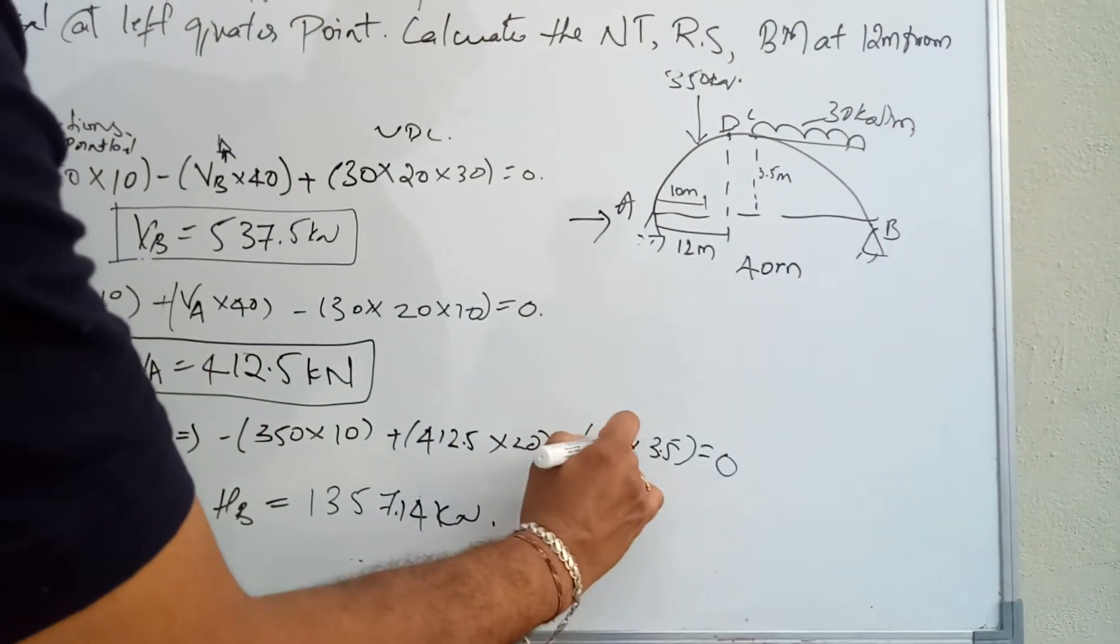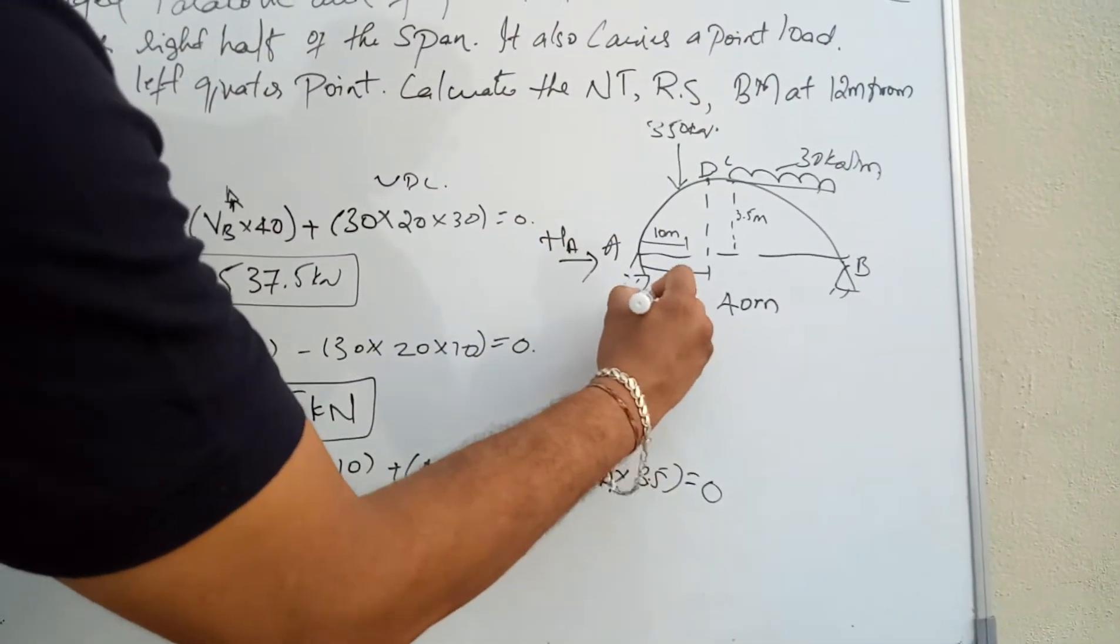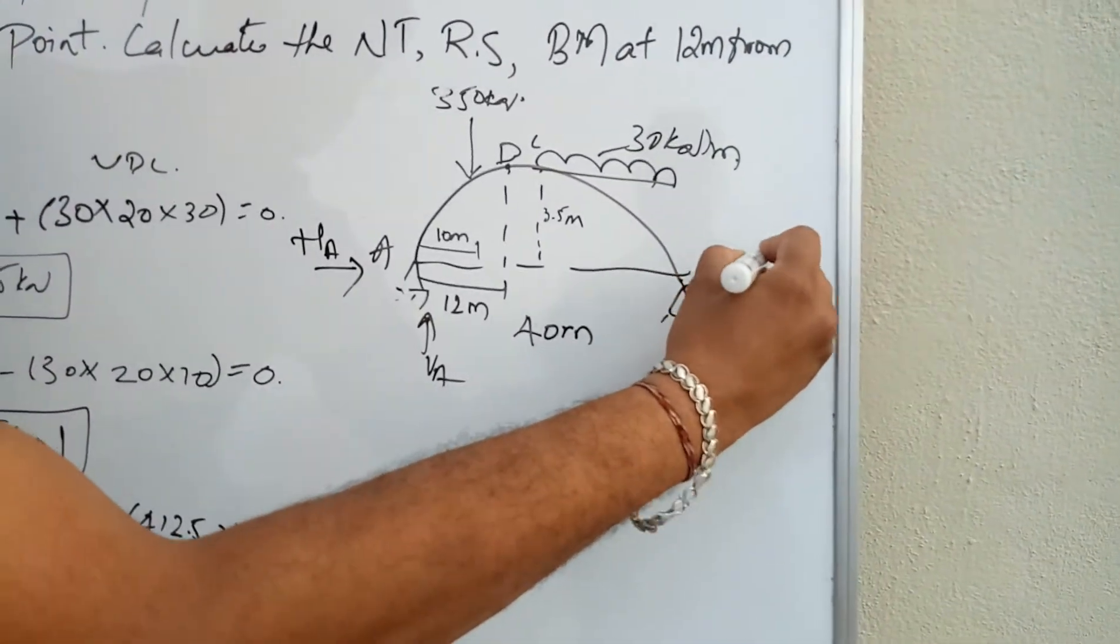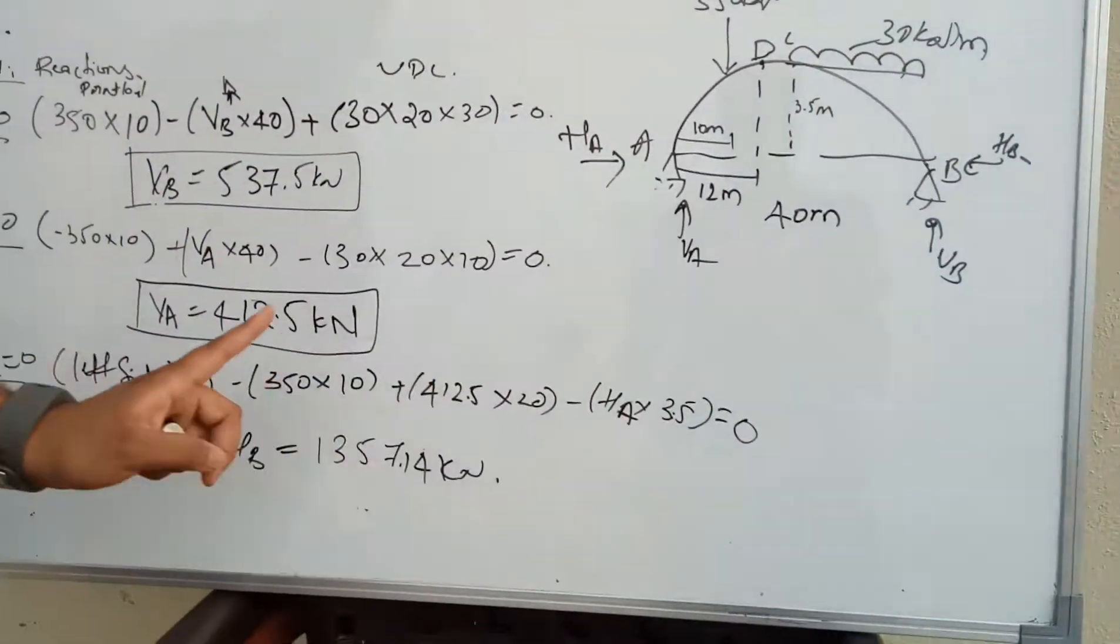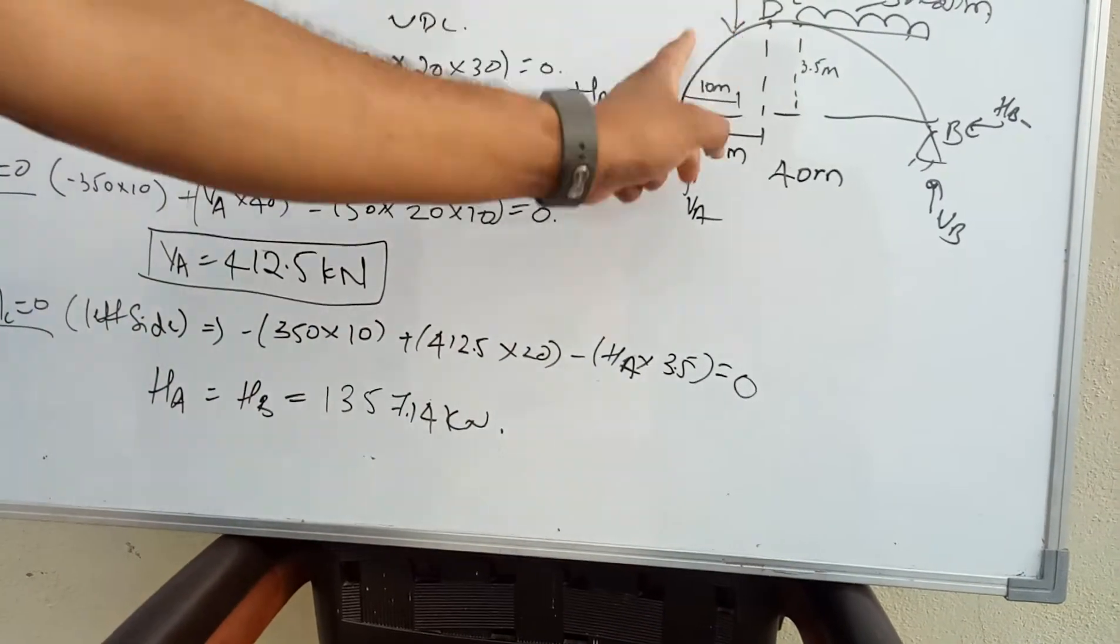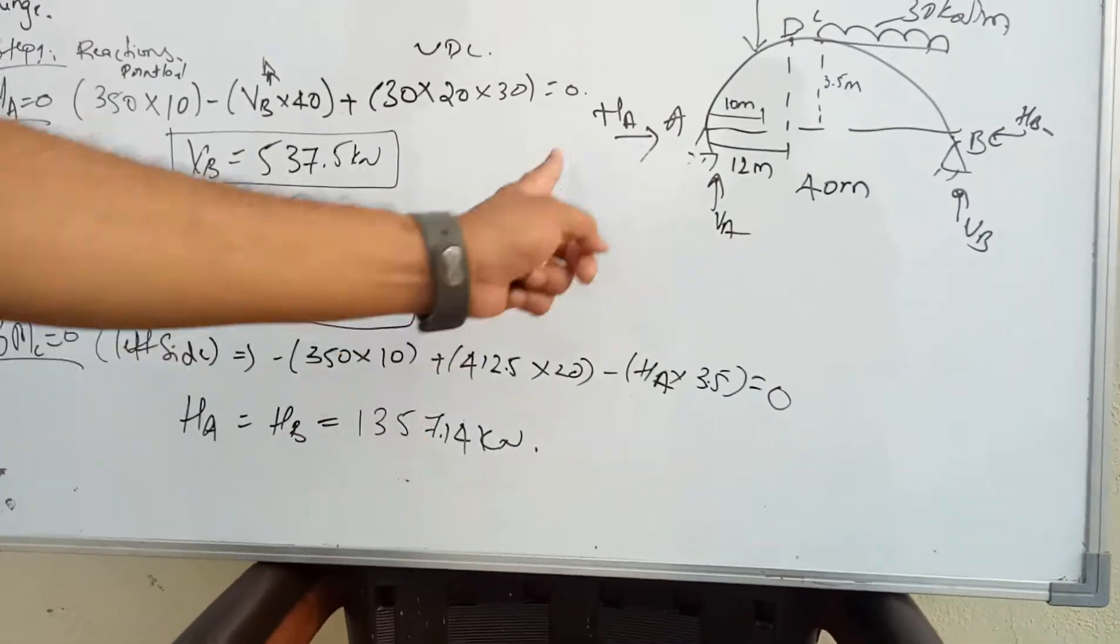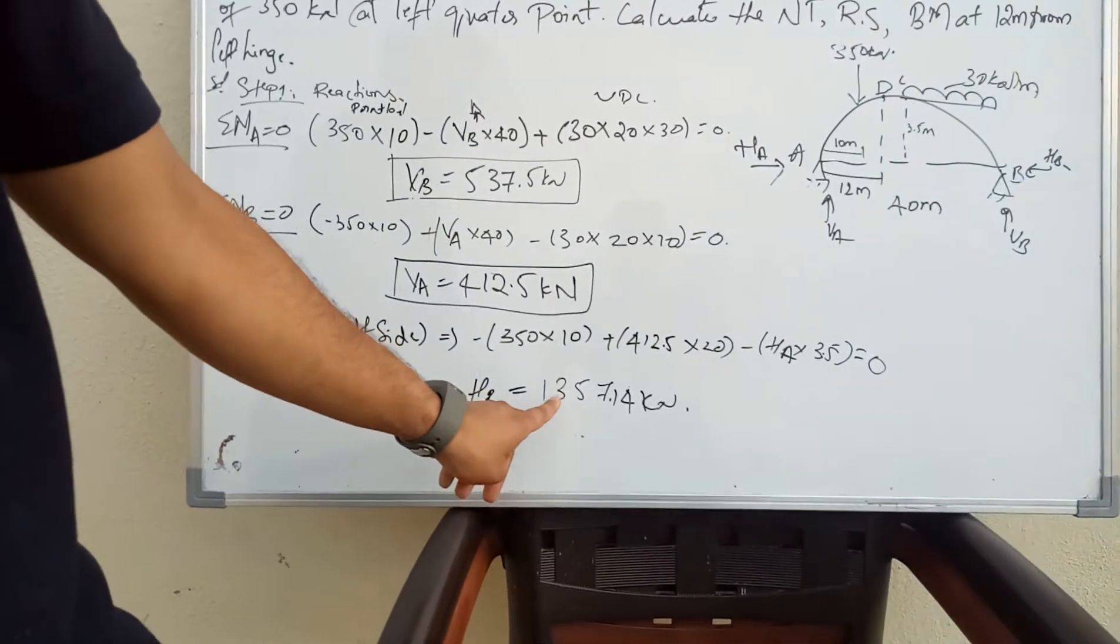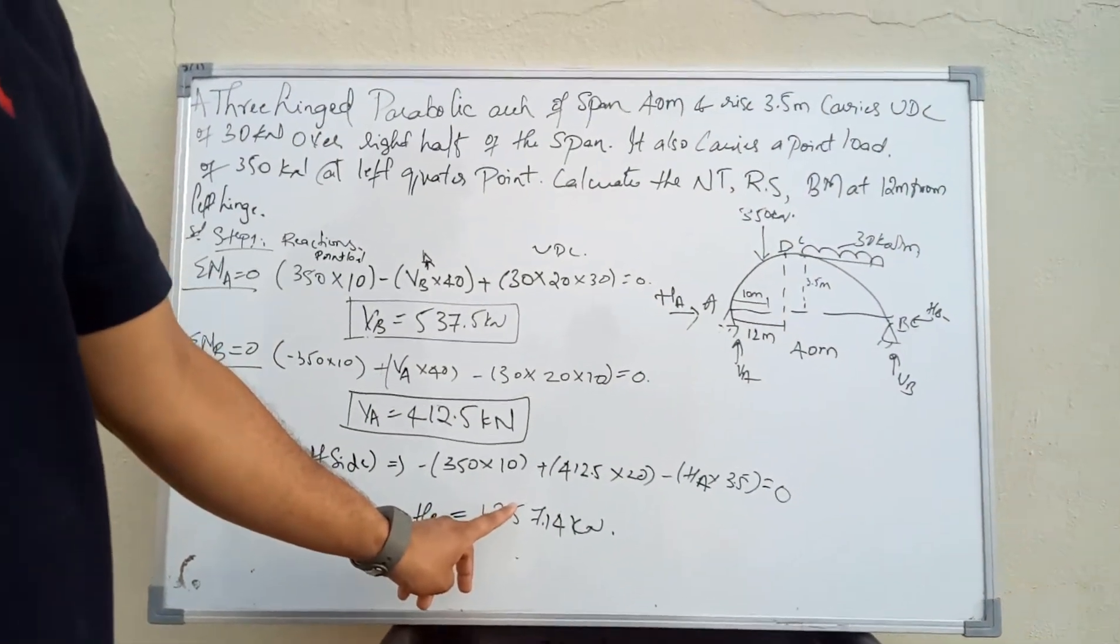This is HA, VA, VB, and HB. VA into 20 equals 412 into 20, HA into 3.5, minus anticlockwise 350 into 10. Finally, we know that HA equals HB from equilibrium conditions. So HA equals HB equals 1357.14 kilonewtons.